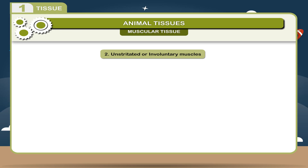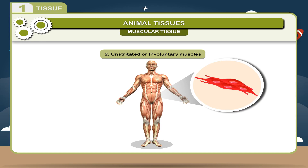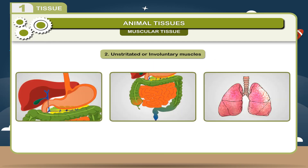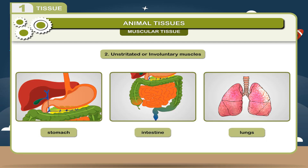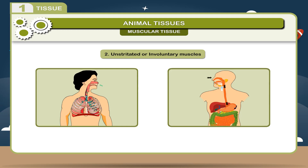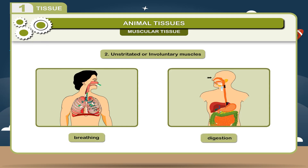2. Unstriated or involuntary muscles: These muscles are composed of cylindrical but spindle-shaped fibers and have no striations on them. They are found on the walls of the stomach, intestine, lungs, etc. These muscles help in breathing, digestion, and other activities. They are not in our control and are therefore called involuntary muscles.